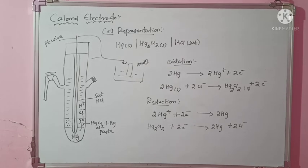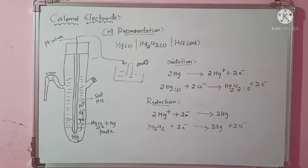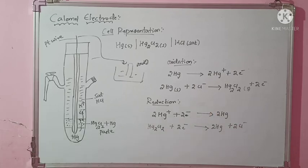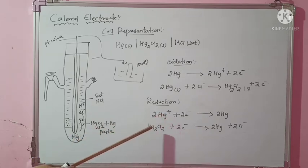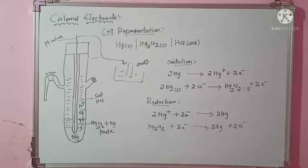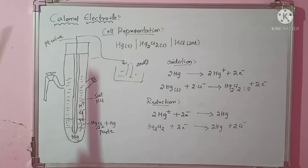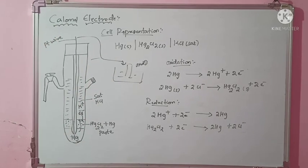The reduction reaction is: Hg2²⁺ + 2e− → 2Hg. In other terms, Hg2Cl2 gains electrons and forms normal Hg, with Cl− being released. So this is all about the calomel electrode. I hope you understood the working, construction, cell representation, and the oxidation and reduction reactions. Remember, the calomel electrode is a secondary reference electrode. Thank you.